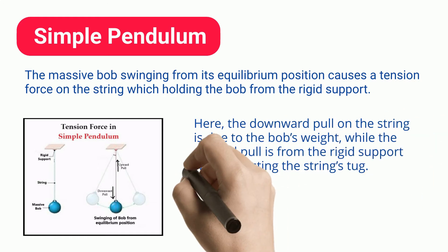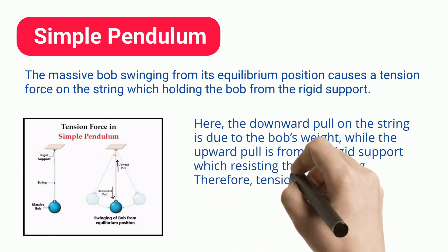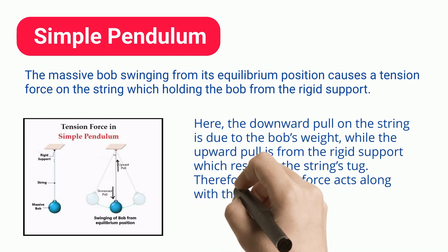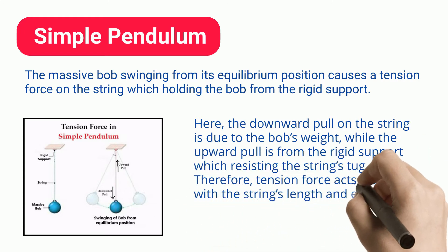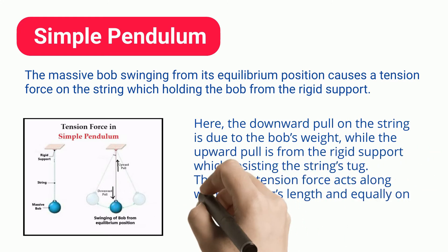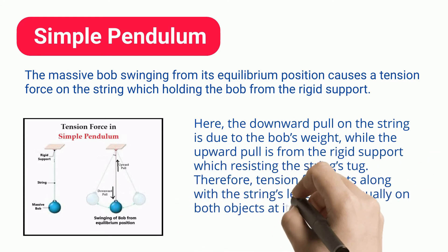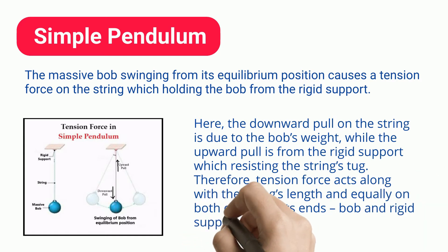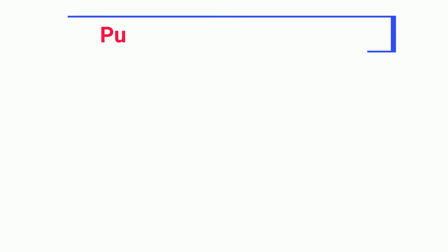Therefore, tension force acts along the string's length and equally on both objects at its ends — the bob and the rigid support.